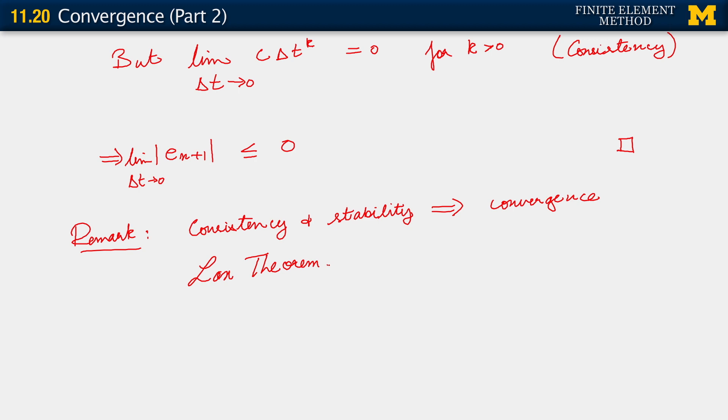We're done with this entire topic of methods for parabolic problems. The approach we've taken is to carry out a standard spatial discretization using the finite element method, but do the time discretization using finite difference methods. Since we're looking at first-order problems, we looked at the Euler family, analyzed its stability, understood the behavior of higher-order modes, looked at consistency, and saw how stability and consistency give us convergence.